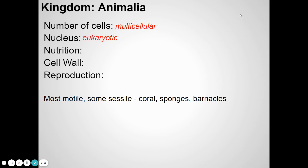How do animals get food? They have to eat things. The word we use is heterotrophs — they have to eat other organisms to get energy. The cells of animals don't have any cell wall; they're surrounded just by a membrane. And mostly they reproduce sexually, where two parents combine genetic material to make the offspring.